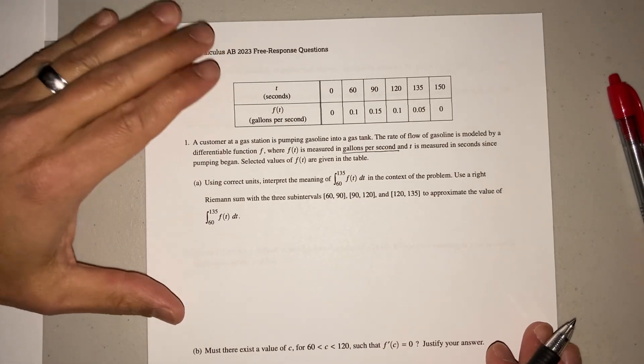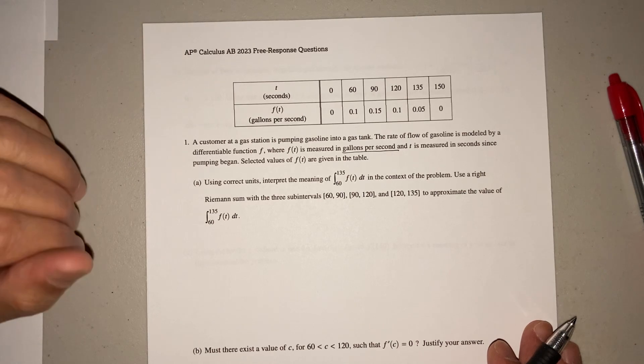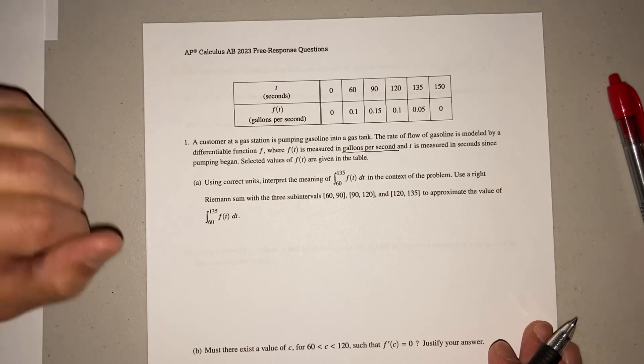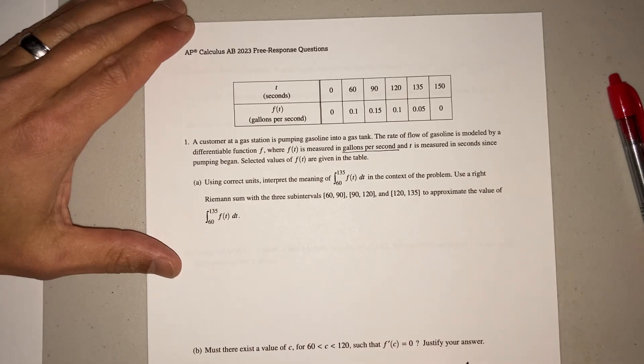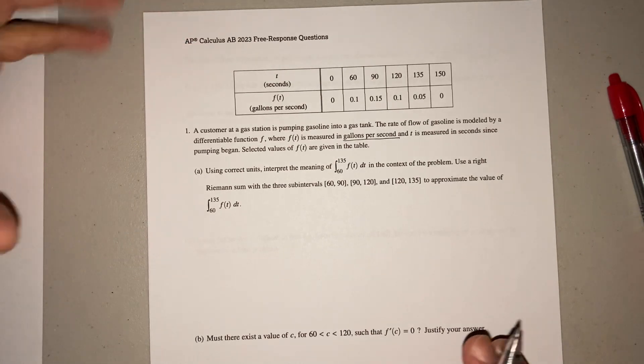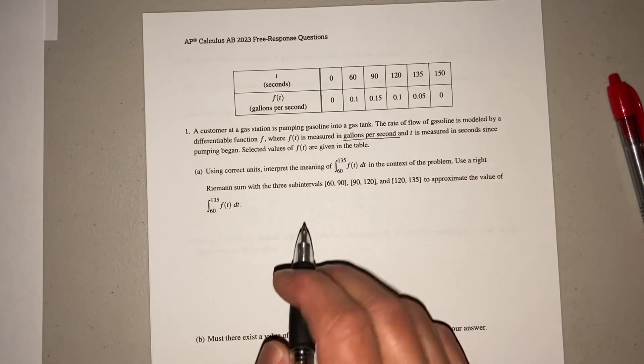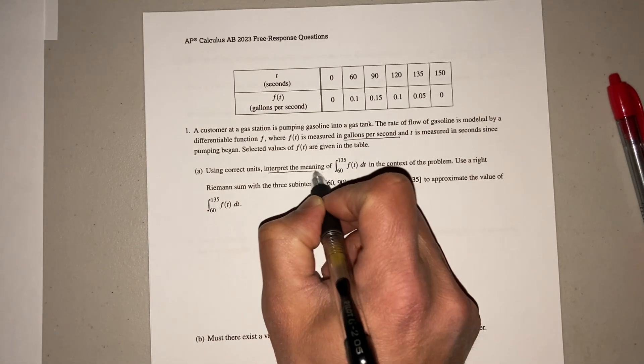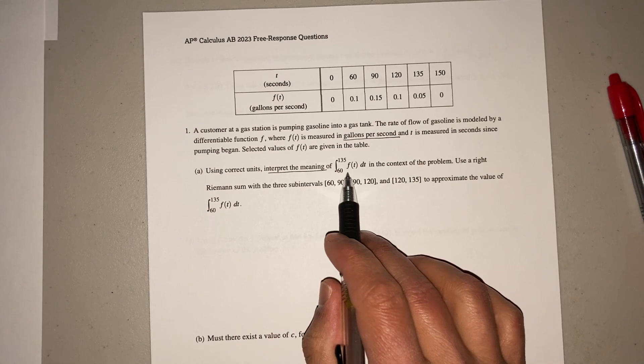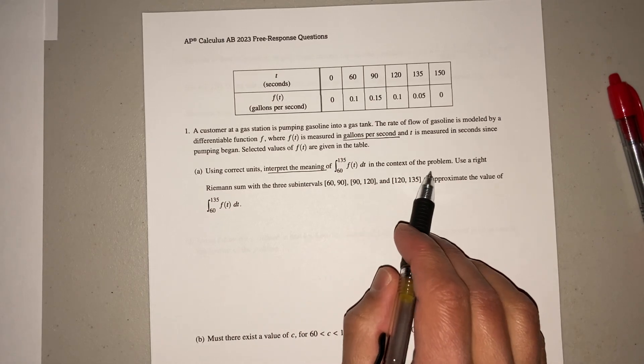So remember, whenever you see a table, start thinking Riemann sum, something, rate of change. And this is the first question in 2023, so I'm thinking it's not going to be too difficult. It says, using the correct units, interpret the meaning of this integral in the context of the problem.